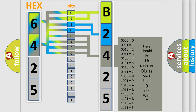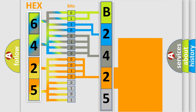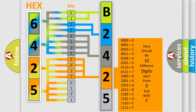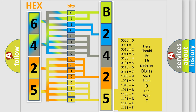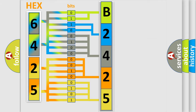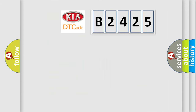The second byte is composed of a combination of eight bits. The first four bits determine the fourth character of the code, and the combination of the last four bits defines the fifth character. A single byte conceals 256 possible combinations. We now know in what way the diagnostic tool translates the received information into a more comprehensible format.